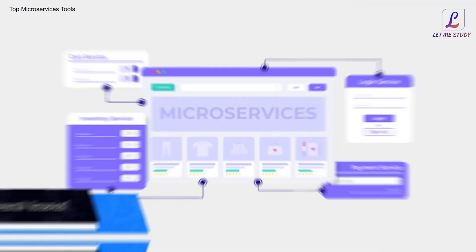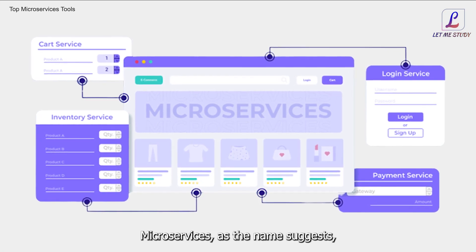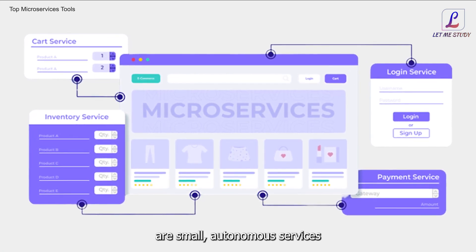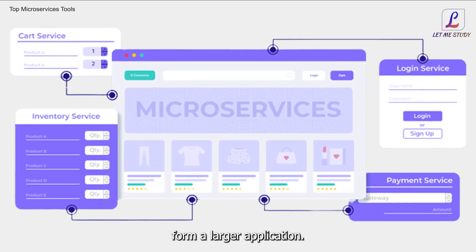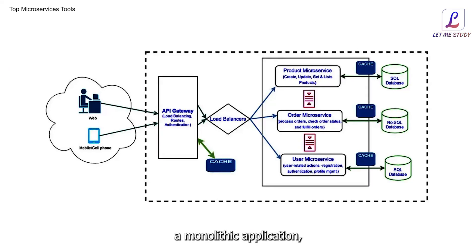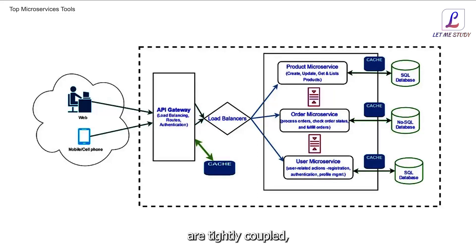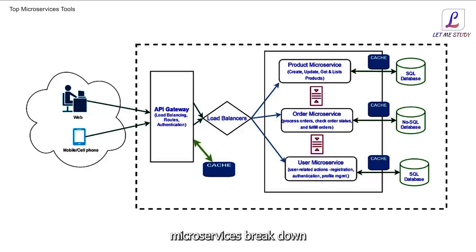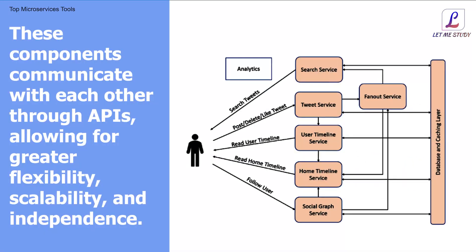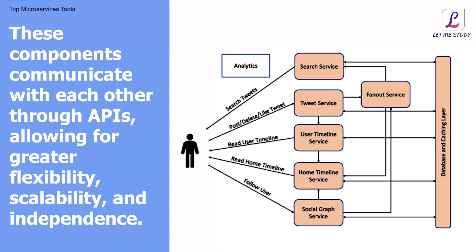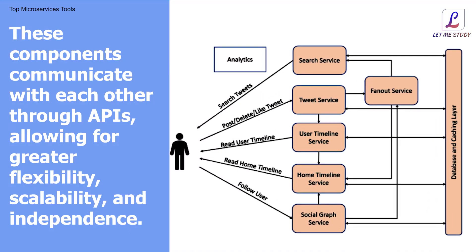What are microservices? Microservices, as the name suggests, are small autonomous services that work together to form a larger application. Instead of building a monolithic application where all the functionalities are tightly coupled, microservices break down the application into smaller decoupled components. These components communicate with each other through APIs, allowing for greater flexibility, scalability, and independence.